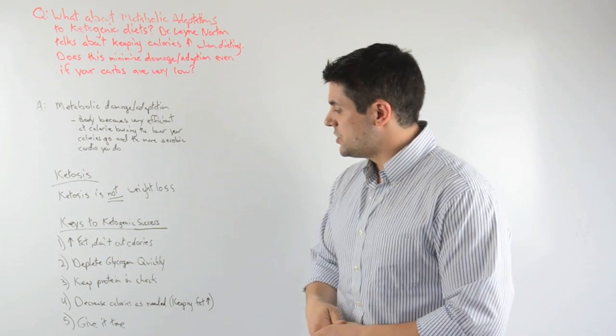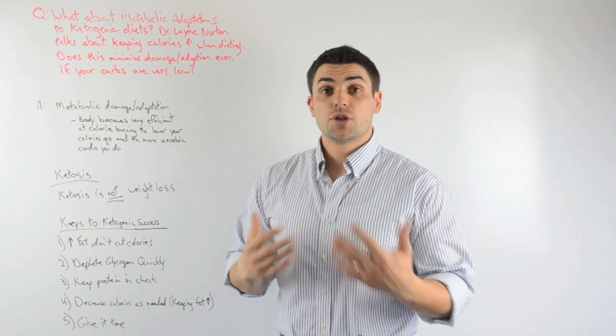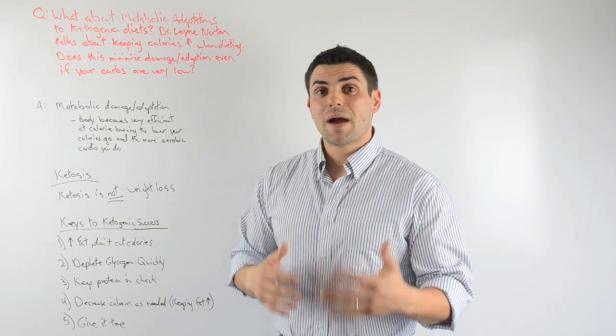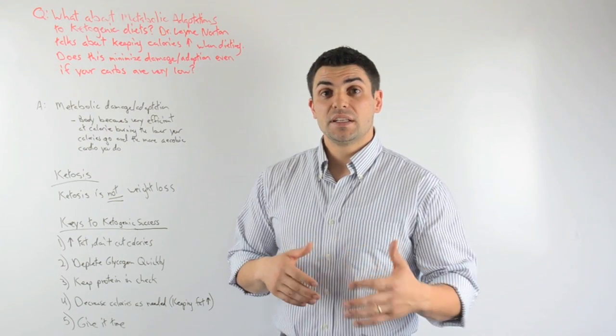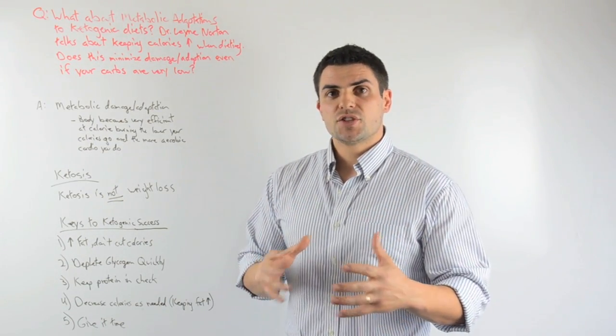The second thing I like to do is to deplete glycogen quickly. Research shows that with one intense bout of exercise, you can deplete muscle glycogen, and that causes the DNA and the mRNA in your body to start producing different compounds and enzymes needed to fuel you in a carb-depleted state.